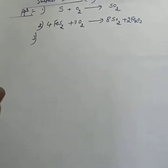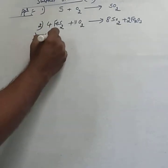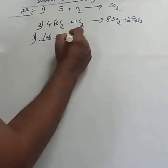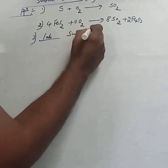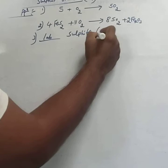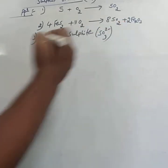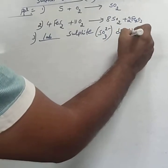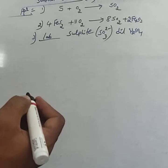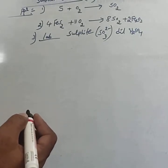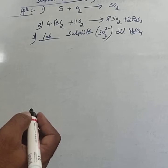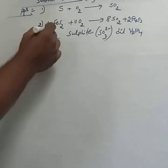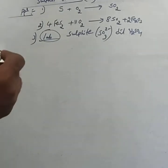The third method is the lab method. In the laboratory, sulfur dioxide is prepared by treating sulfite (SO₃²⁻) with dilute sulfuric acid or dilute HCl. This is the laboratory method and is the most important one, even for the competitive level.